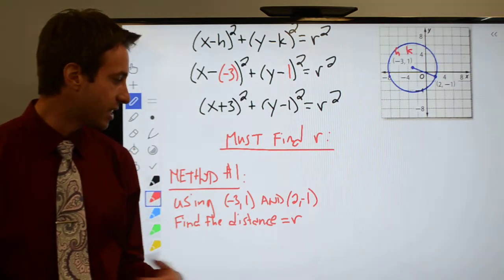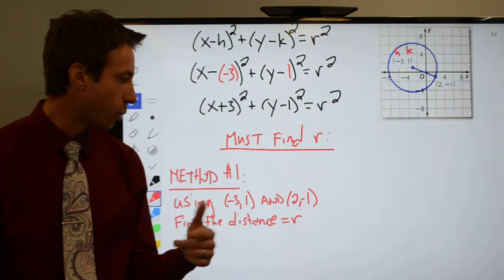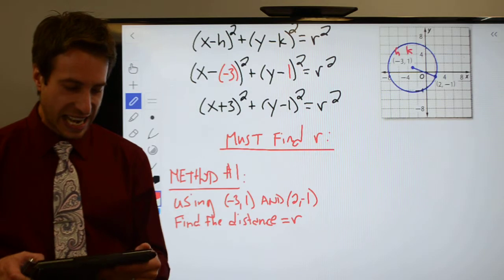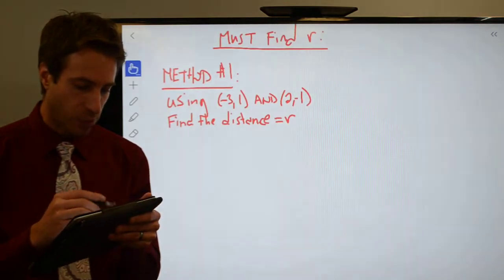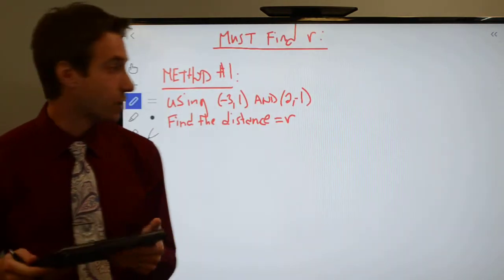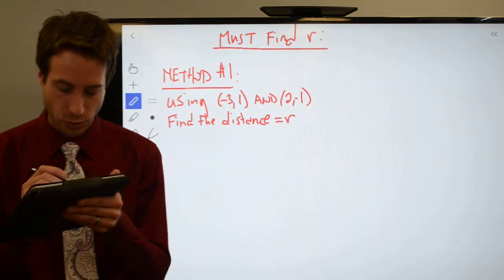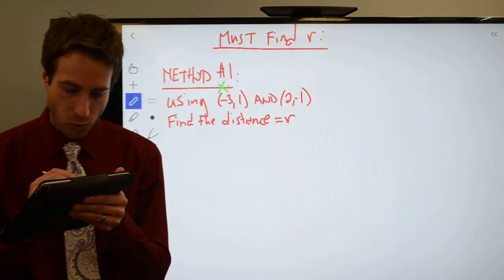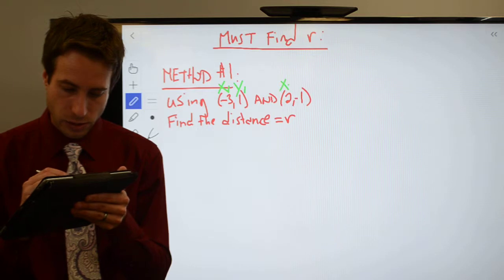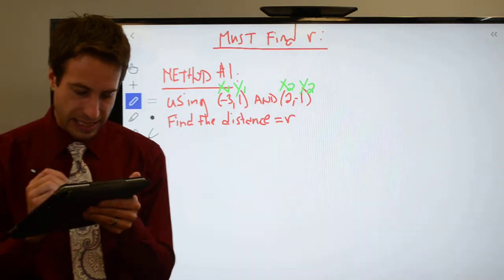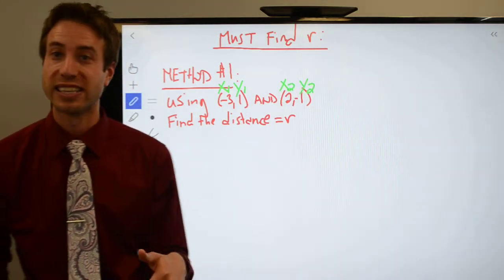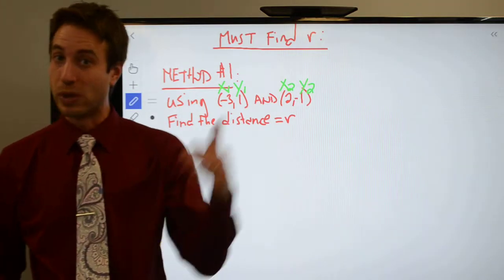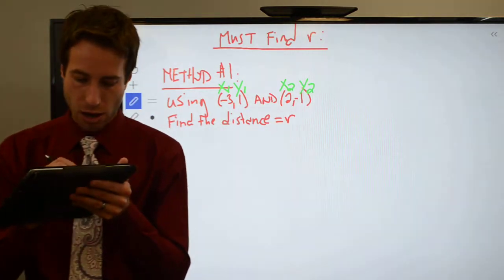Remember, in order to use the distance formula, I need an x1 and a y1, an x2 and a y2. And again, the way that I generally like to do that is the point farthest to the left, x1, y1, and the point farther to the right, x2, y2. So anyway, this will be my x1, y1, x2, y2, and here we go. I'm not even going to call it the distance. I know that the distance will be the radius, so I'm just going to call it r.